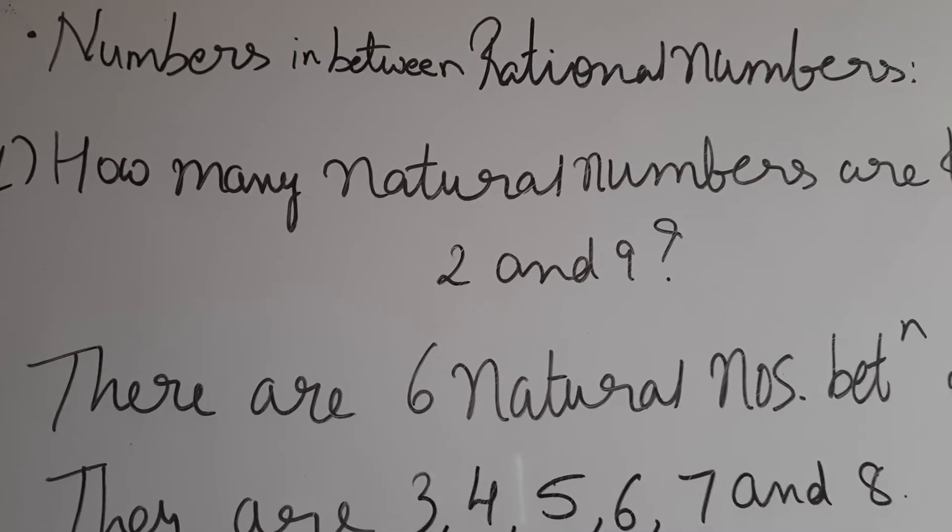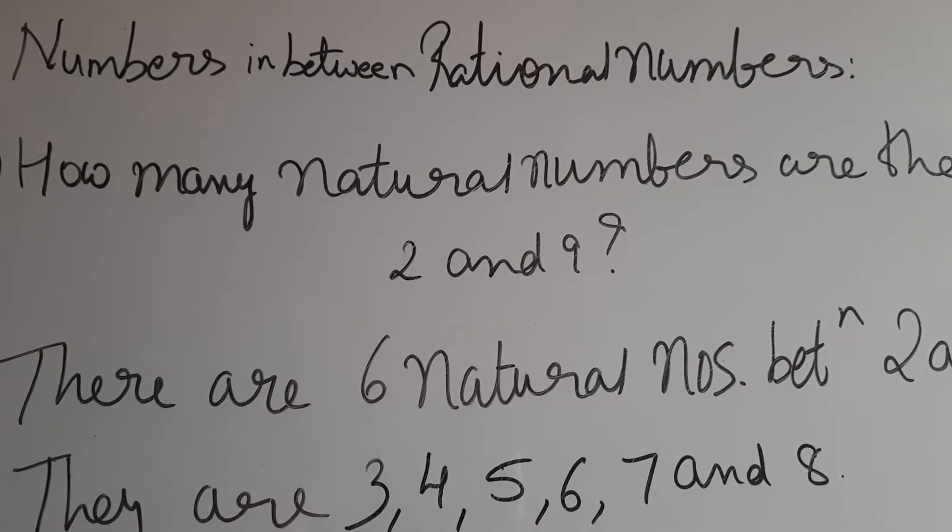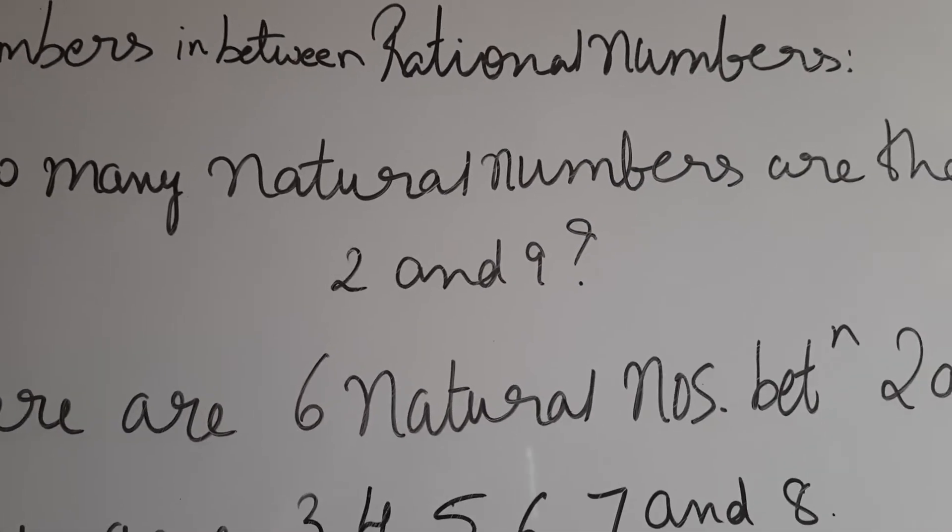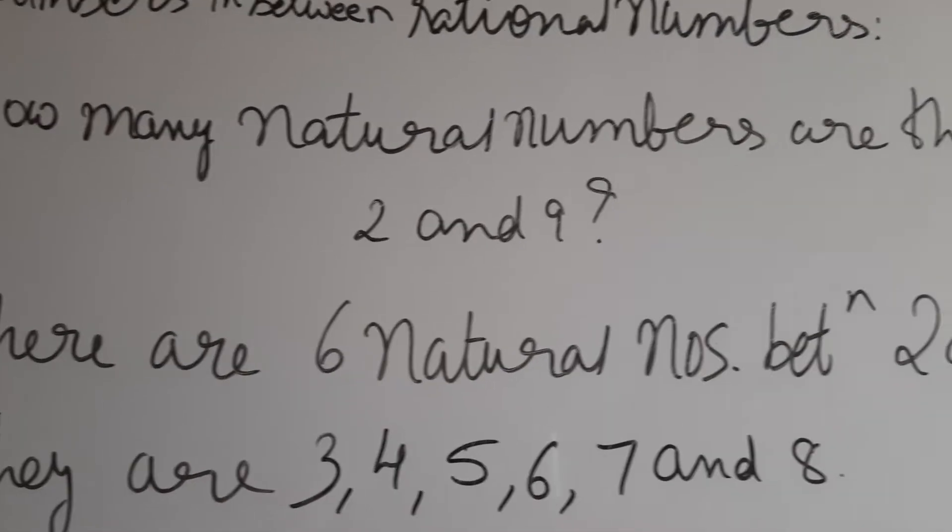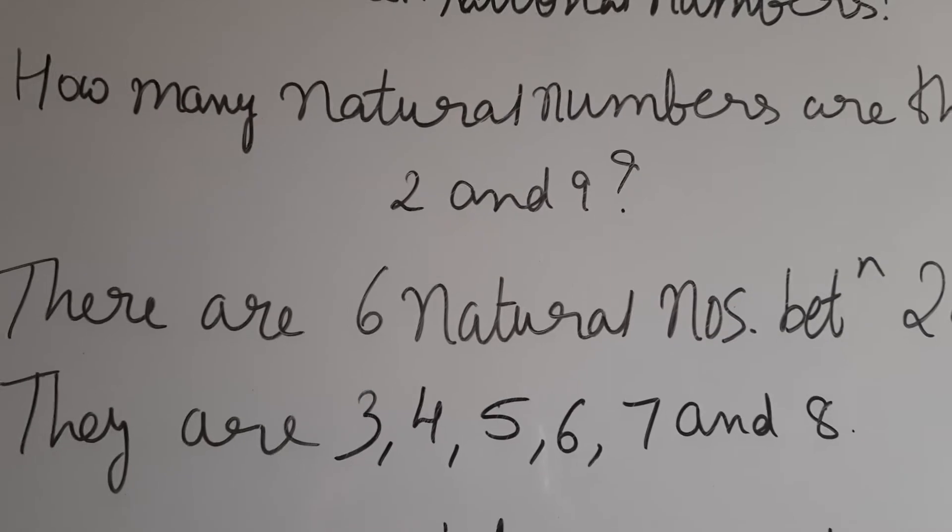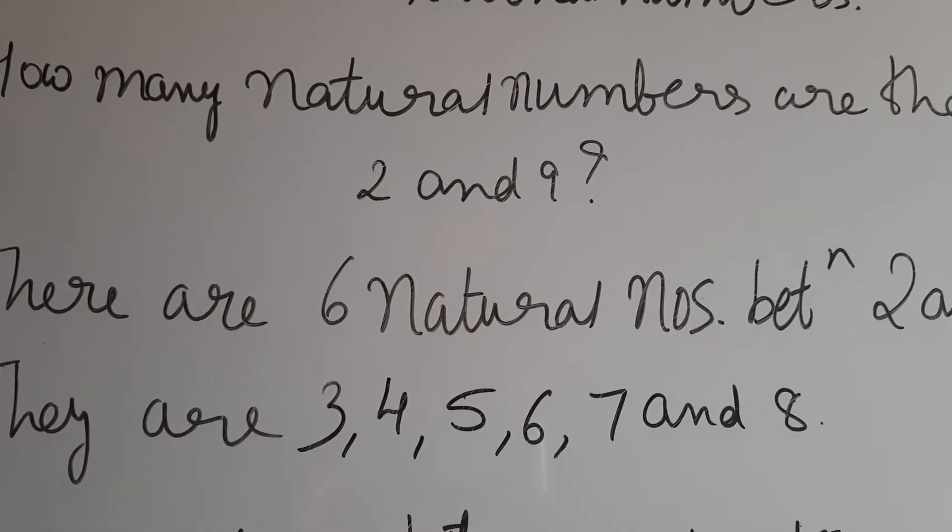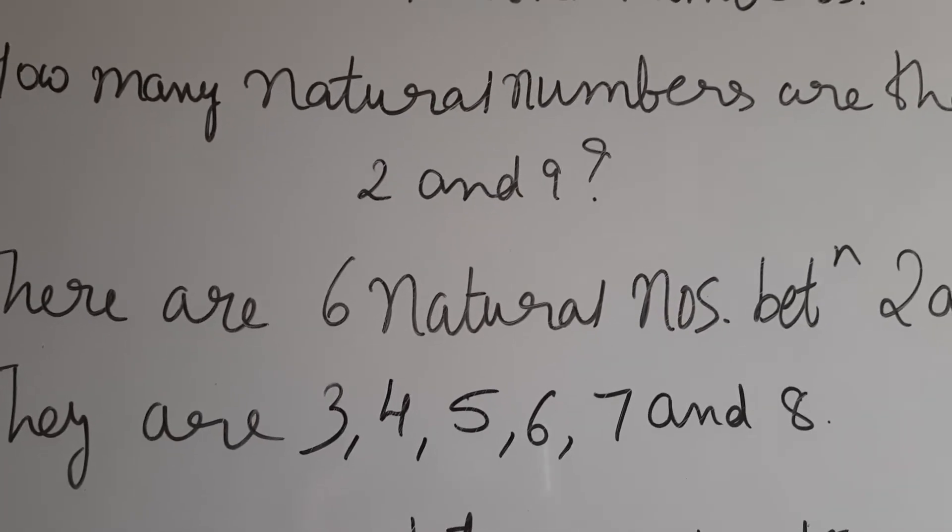The first question is: how many natural numbers are there between 2 and 9? So directly I have given the answer. There are 6 natural numbers between 2 and 9. They are 3, 4, 5, 6, 7 and 8. It is easy to answer.